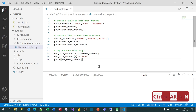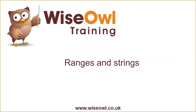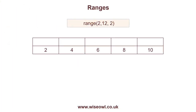So far we've looked at lists and tuples, but there are four types of sequences which you can iterate over. The other two types are ranges and strings, so let's have a look at those now.